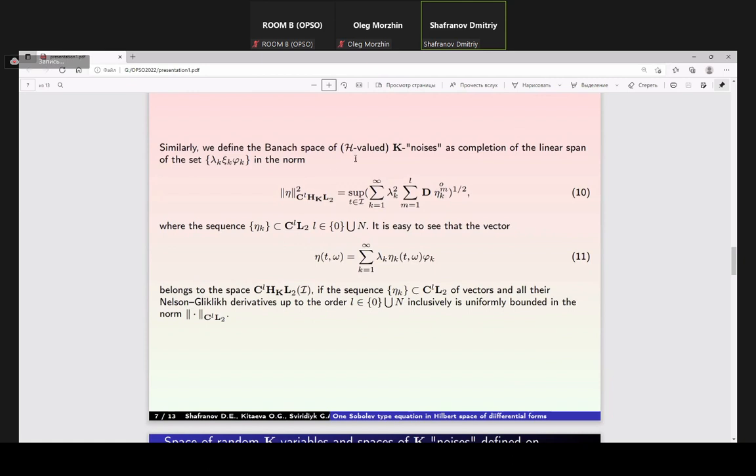Similarly, we define the Banach space of K-noises as a completion of the linear span of a set in the norm 10, where the sequence eta sub k is in C supplement l L sub 2. It's easy to see that vector eta from 11 belongs to the space C supplement l H sub K L sub K from big I, and the sequence eta sub k from the C supplement l L sub 2, C supplement l L sub 0, and all where Nelson-Gliclich derivatives up to the order l inclusively is uniformly bounded in the norm of C supplement l L sub 2.